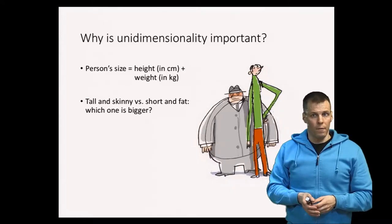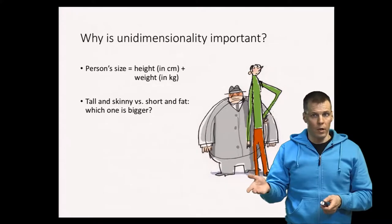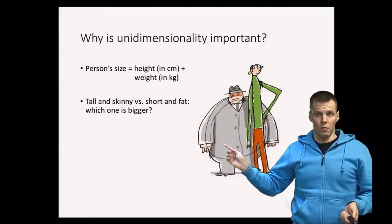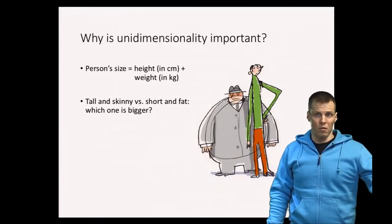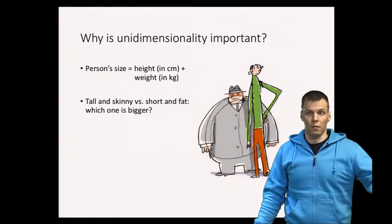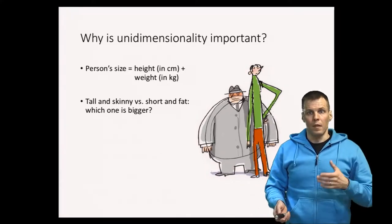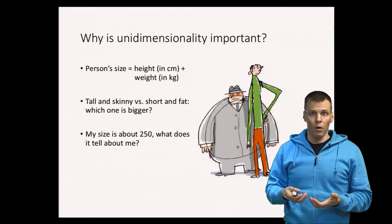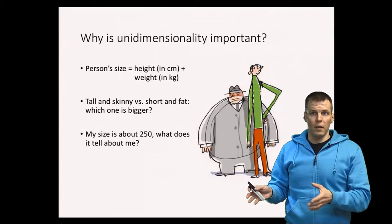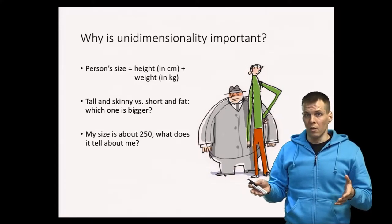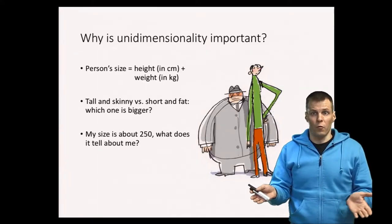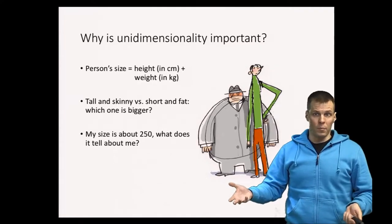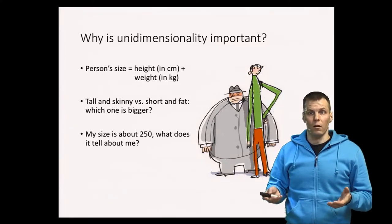Consider a score defined as a person's height plus their weight — we call this their 'size.' The problem is: which person is bigger, the tall and skinny person or the short and fat person? We cannot really say, because the concept of a big person relates to both of those concepts. A person can be considered big if they're tall, or big if they're heavy. These are two different kinds of people and we cannot say they are equivalent.